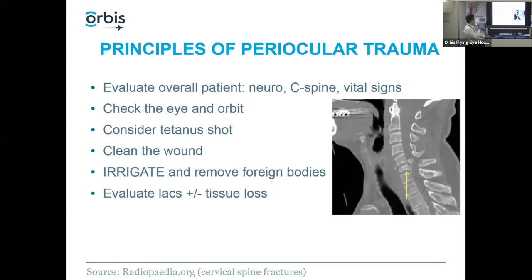Then evaluate for lid lacerations and any tissue loss. The majority of the time there really is no tissue loss even though it looks like there is — if the eyelid is cut it splays apart and appears as though a chunk is missing. You might think a dog ate part of the eyelid, but it's very rare. More commonly the lid tears or avulses, and even blunt trauma can cause eyelid avulsion.